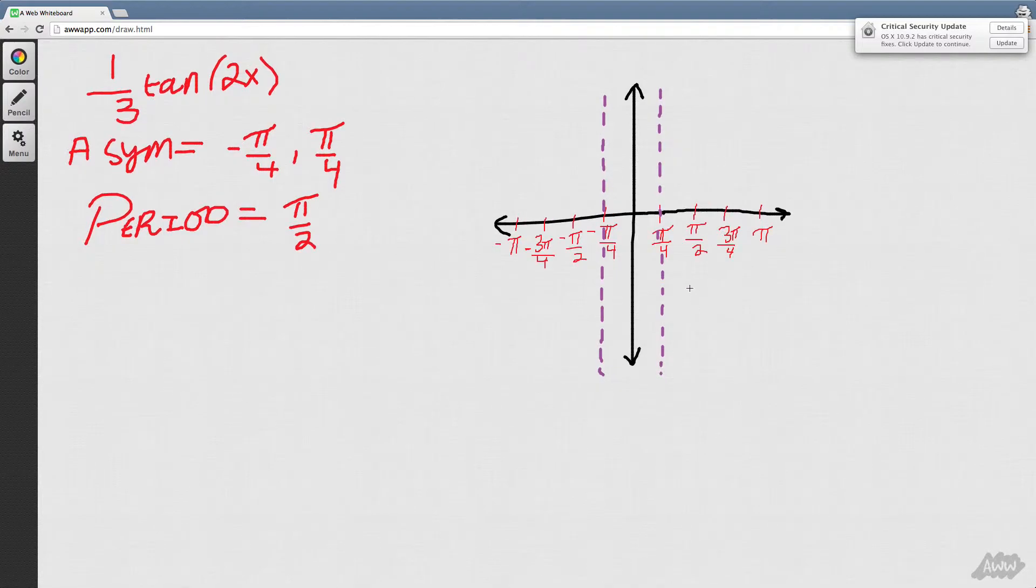So the x-intercept is always the point in between the asymptotes. So the point in between negative pi over 4 and pi over 4 is 0. And from there, we can now draw our tangent graph.